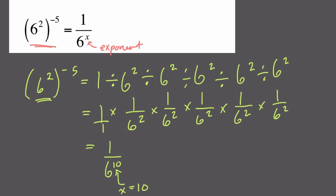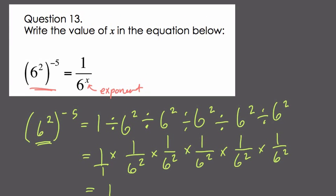Another way of approaching this problem is to just apply your laws of exponents directly. Here, we have 2 exponents in this position, 6 squared in parentheses raised to a power. We can just multiply those exponents. And we can say 2 times negative 5 is negative 10. So if I rewrite this, we get 6 to the negative 10 equals 1 over 6 to the x.